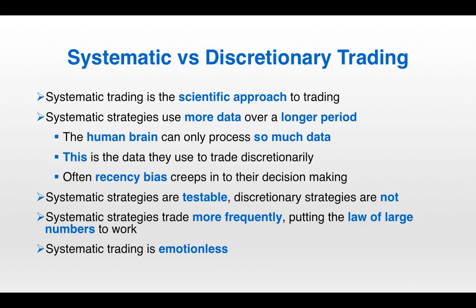Let's talk about systematic versus discretionary trading. Systematic trading is the scientific approach to trading — it is data driven. Systematic strategies use more data over a longer period. The human brain can only process so much data, so if you're a discretionary trader, you can only trade a handful of markets because you can't watch them all.